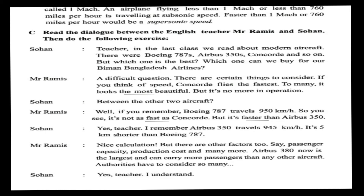Now, everybody follow Activity C. Read the dialogue between the English teacher Mr. Ramesh and Sohan, then do the following exercise. Sohan says: In the last class we read about modern aircraft. There were Boeing 787s, Airbus 350s, Concorde and so on. But which one is the best? Which one can we buy for our Biman Bangladesh Airlines?